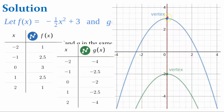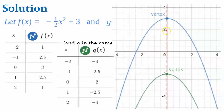Function f is the blue line. I'm not comparing to the parent function now — I'm comparing g to function f. If I talk about the parent function, function f has been translated up 3 units, reflected in the x-axis, and it is a vertical shrink by a factor of one-half. But comparing function g to function f, all that has changed is that it has been vertically translated down 5 units.